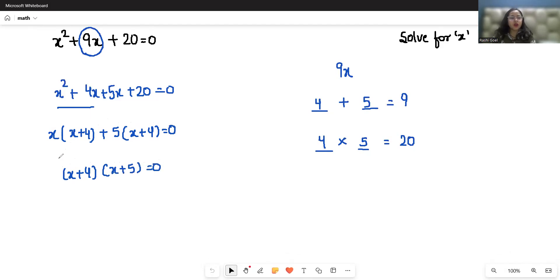The two factors of this quadratic equation are x plus 4 and x plus 5. To find the solution, you have to put the factors equal to 0. First, x plus 4 equals 0, which gives the value of x as minus 4. When x plus 5 equals 0, this gives the value of x as minus 5. So these are the two values of x.